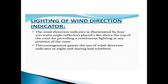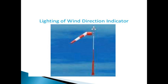Next is the lighting of the wind direction indicator. As we know, the orientation of an airport is determined with the help of wind direction. Both the engineers on site and the pilot need to know the wind direction. This is indicated by the lighting of the wind direction indicator, as shown in the figure.